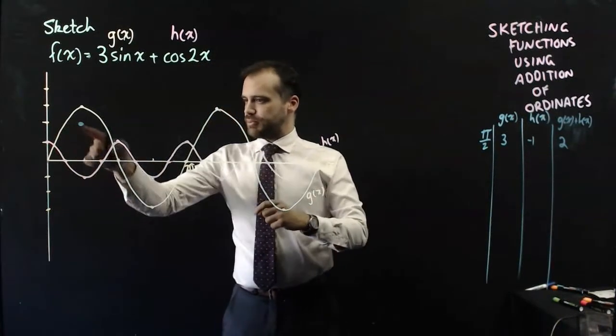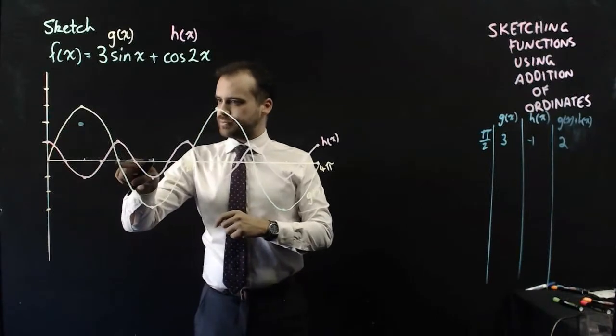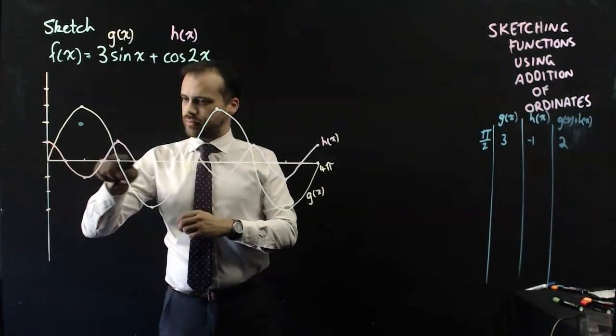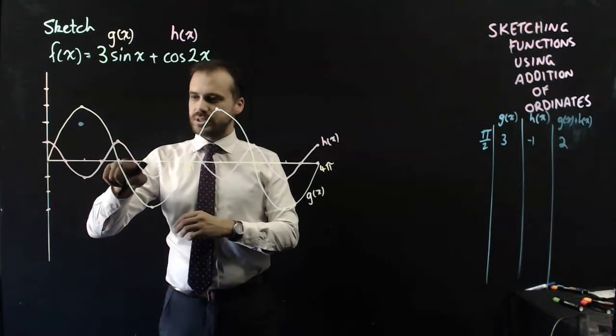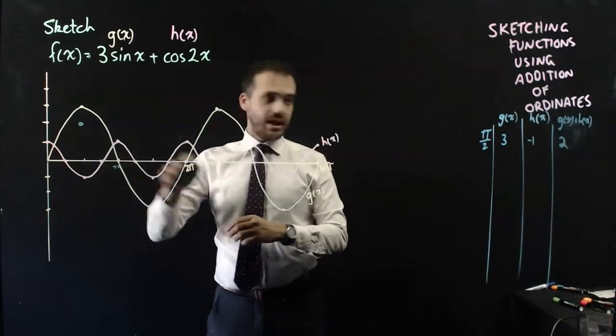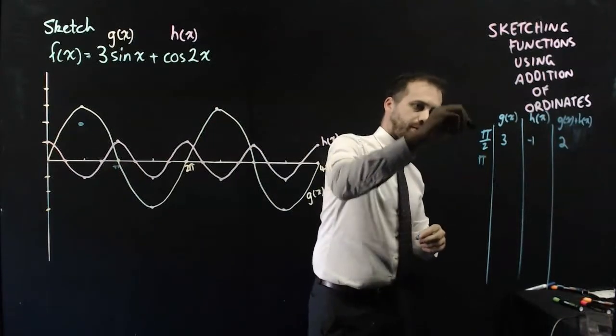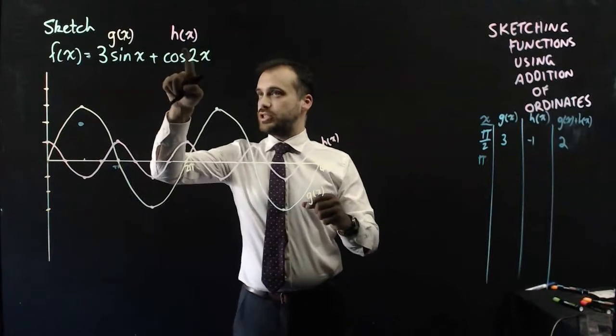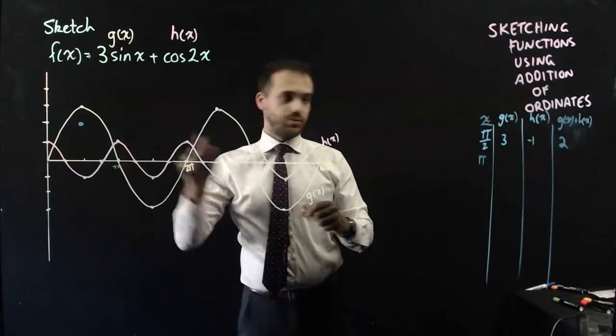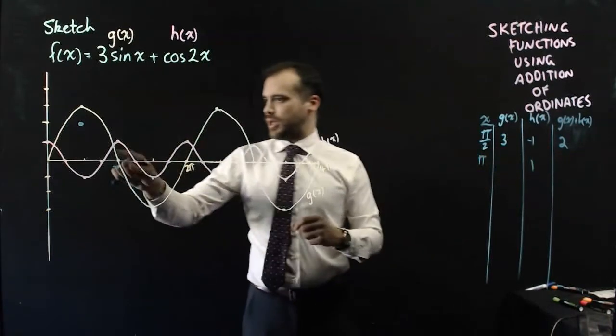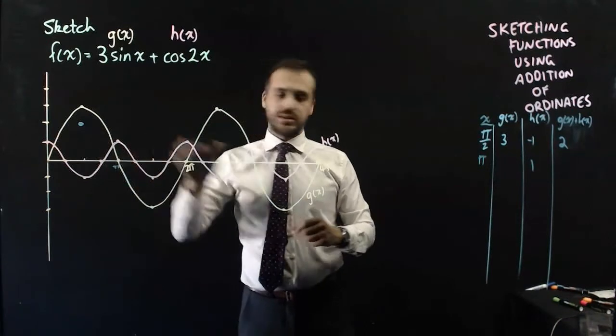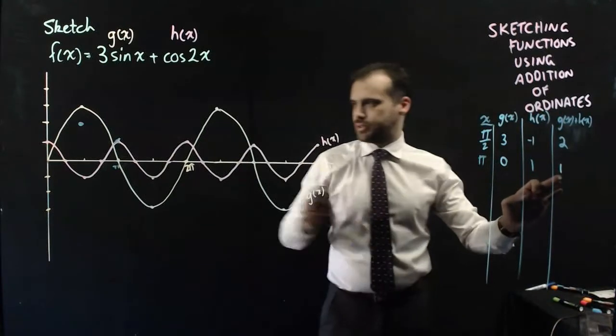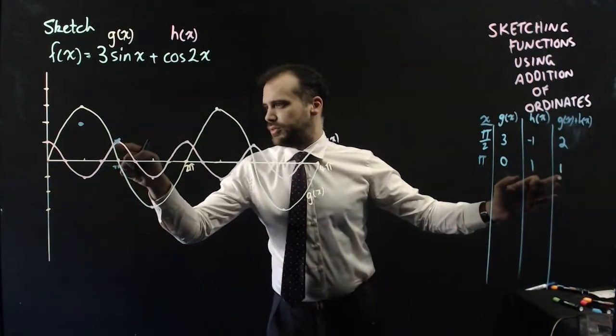Okay, let's pick another point, say this point here. This is not π/2, this is π here. Okay, so at π, when x is equal to π, h(x) is 1, and g(x) is 0. Which means that adding 0 and 1 together, we get 1, which we can put right there.